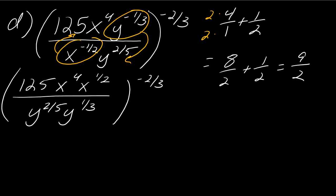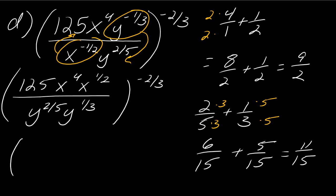Okay, so that's for the x's. And then for the y's, I need to do 2 fifths plus 1 third. I need to get a common denominator of 15. So multiply the top and bottom here by 3 and the top and bottom here by 5. So I get 6 over 15 plus 5 over 15. And so that's going to be 11 over 15. Okay, so I'm going to now rewrite this. 125 x to the 9 halves over y to the 11 over 15.